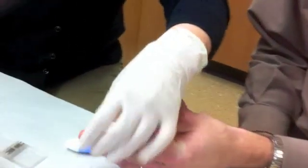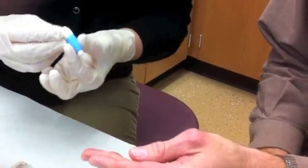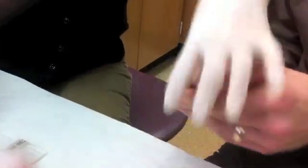An alcohol swab is used to disinfect the fingertip. The lancet initiates bleeding and a small amount of blood is drawn to the first mark on the pipette.